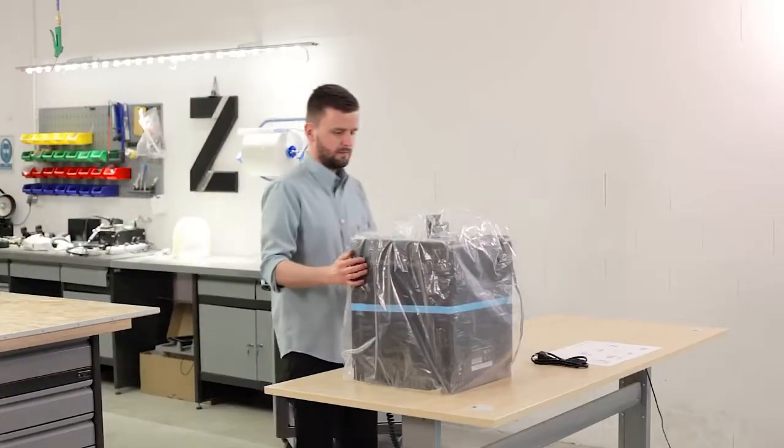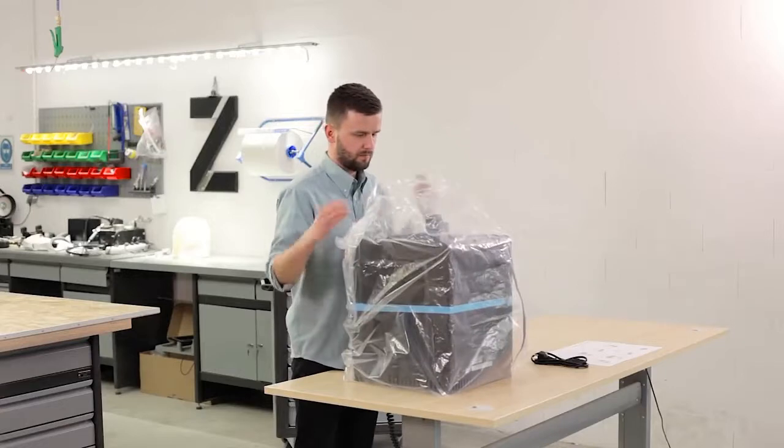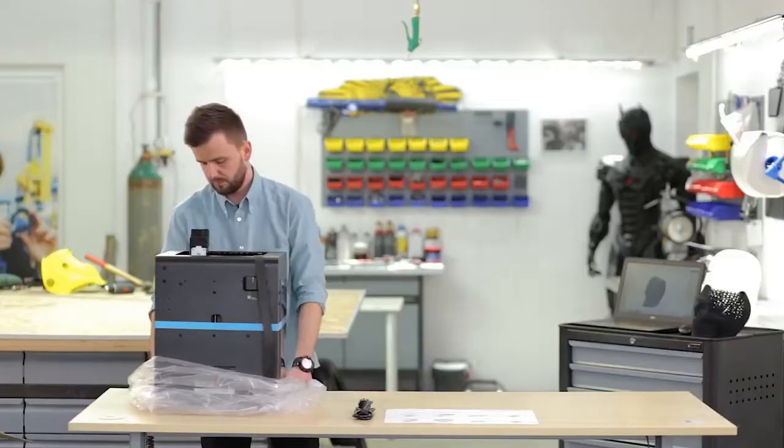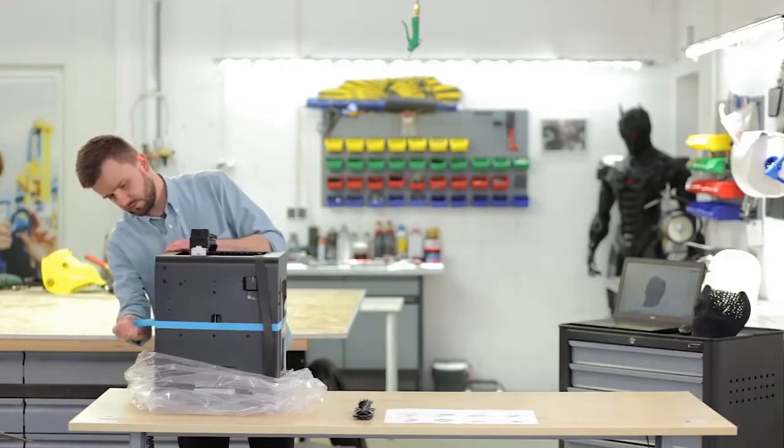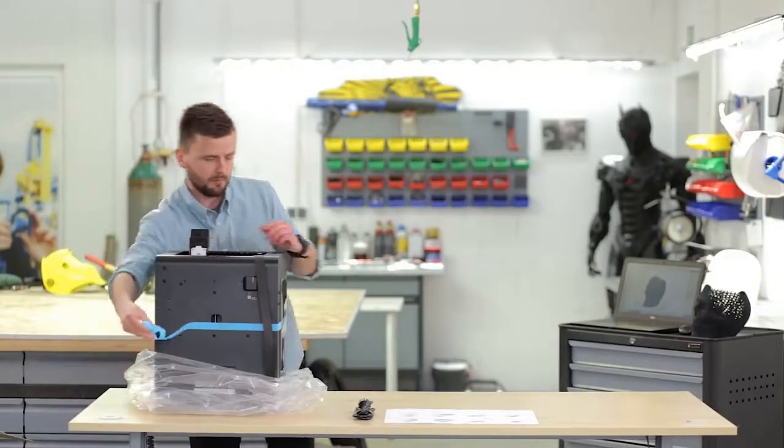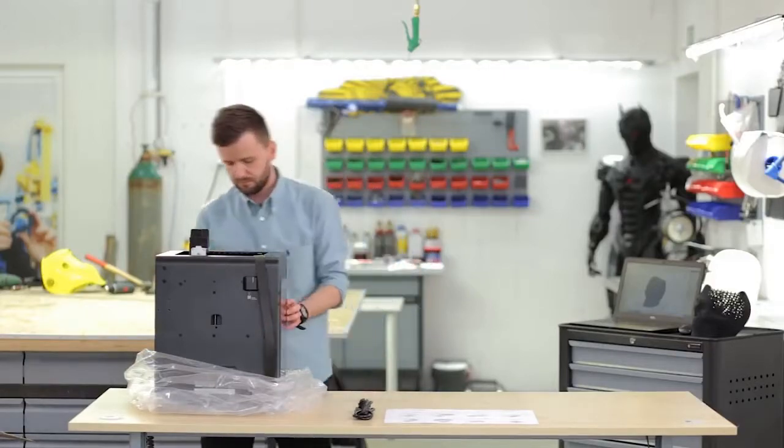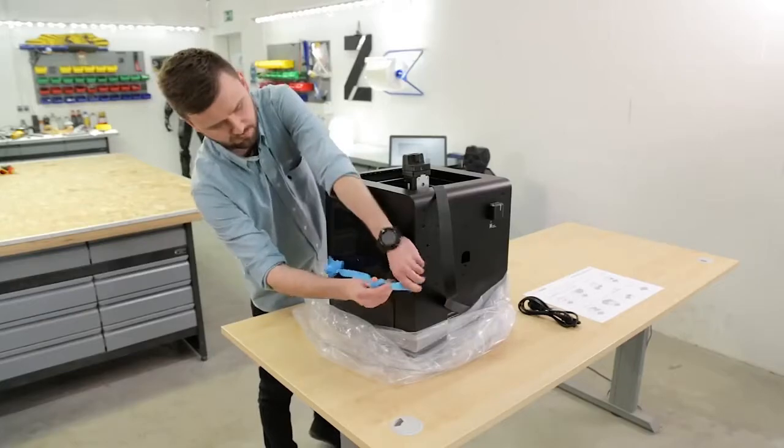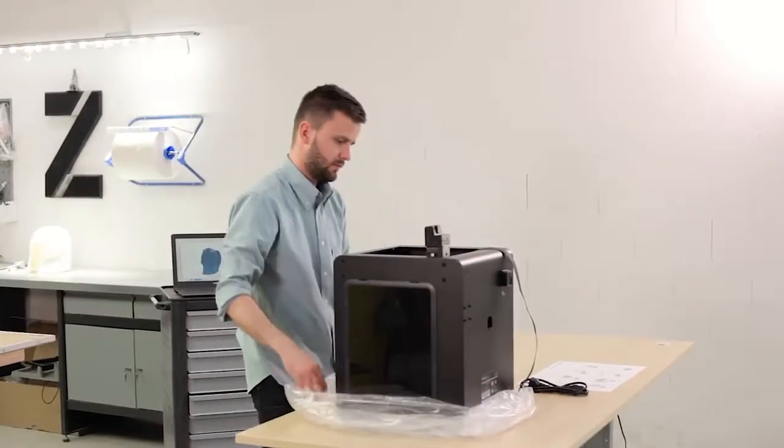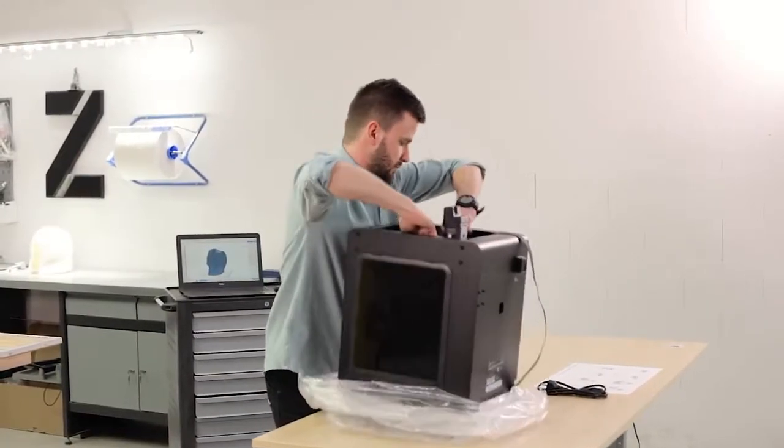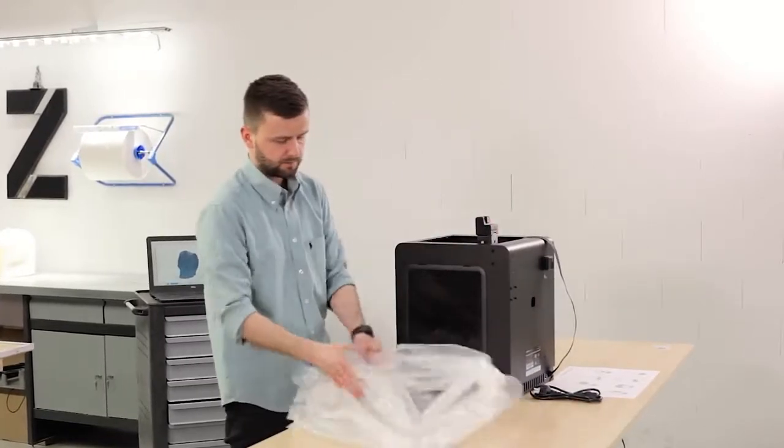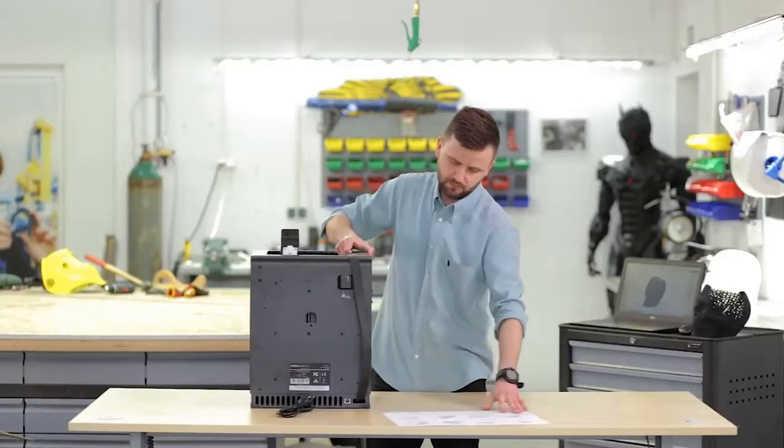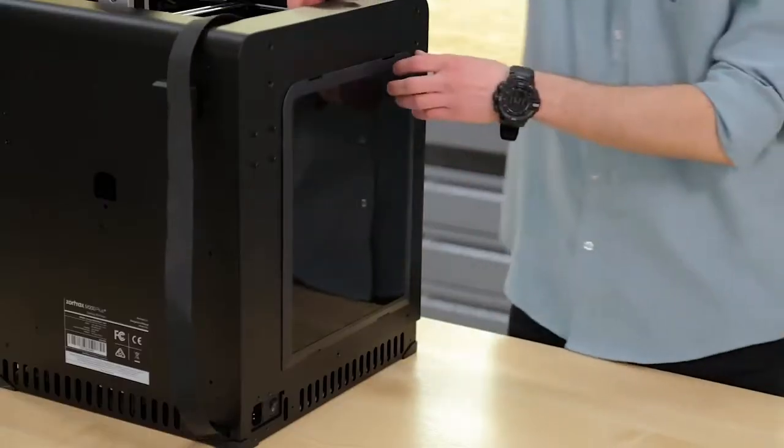If you take off the foil, you will find that unlike the original M200, the Plus version already comes with the side covers installed. Take off the blue safety tape carefully. You've probably noticed that Adam likes to keep the working area clean. Remove one of the side covers.